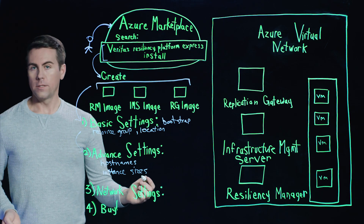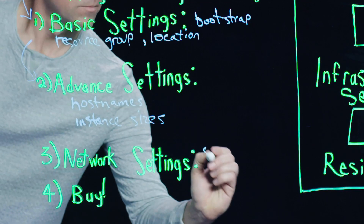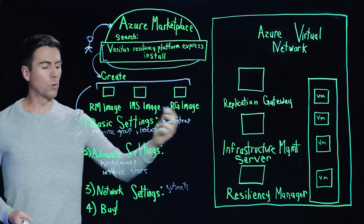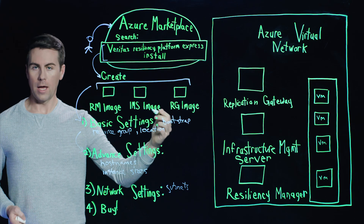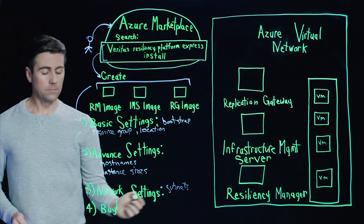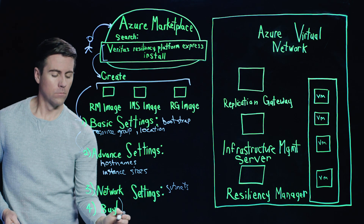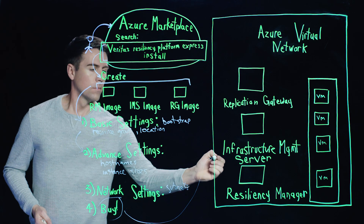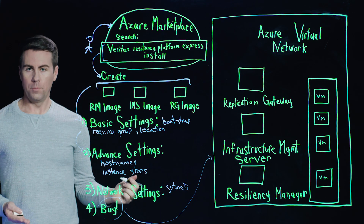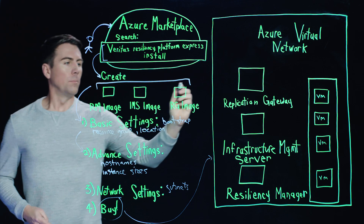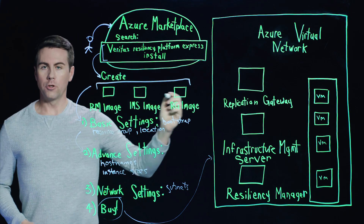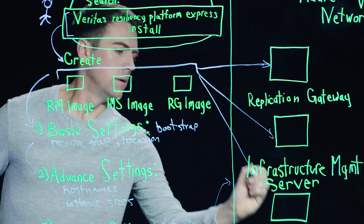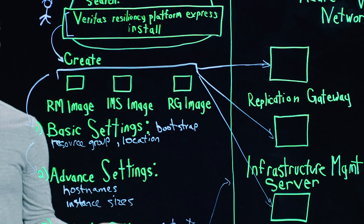From there, we simply enter our network settings — specifically the subnets within our Azure virtual network where we're going to deploy our Resiliency Platform appliances. Once that's done, we can simply click the buy button, and this will finalize the deployment process. Our appliances that were initially images within the Azure Marketplace are then deployed into our Azure virtual network.